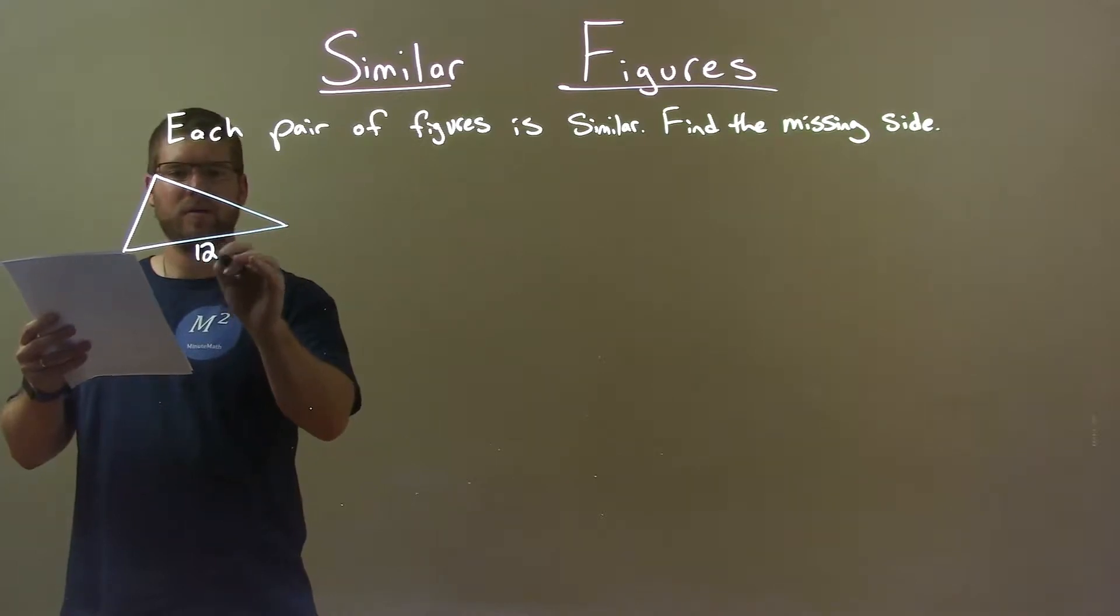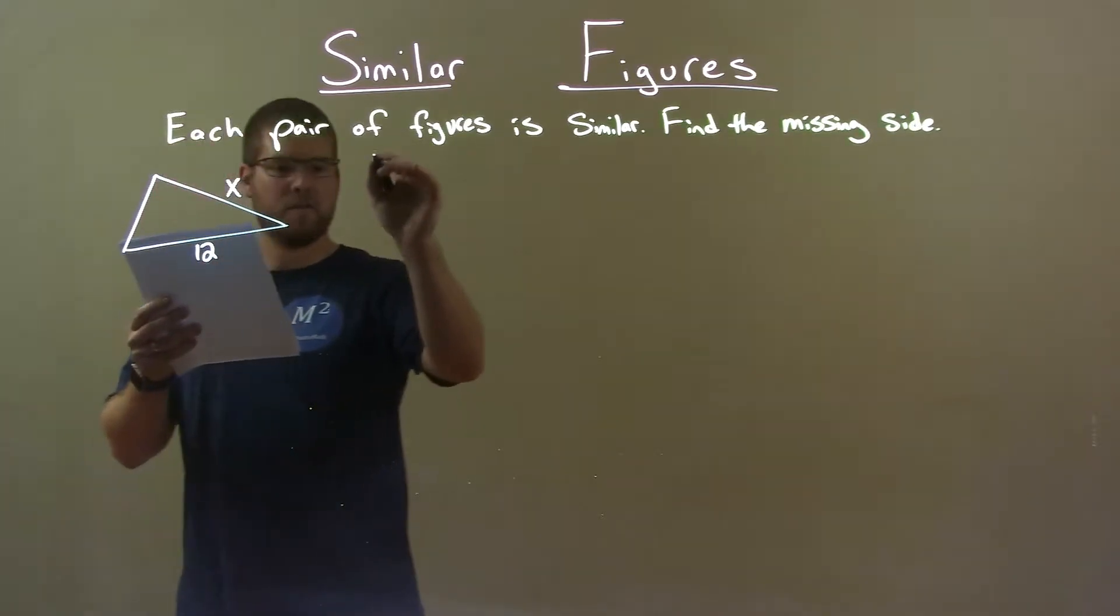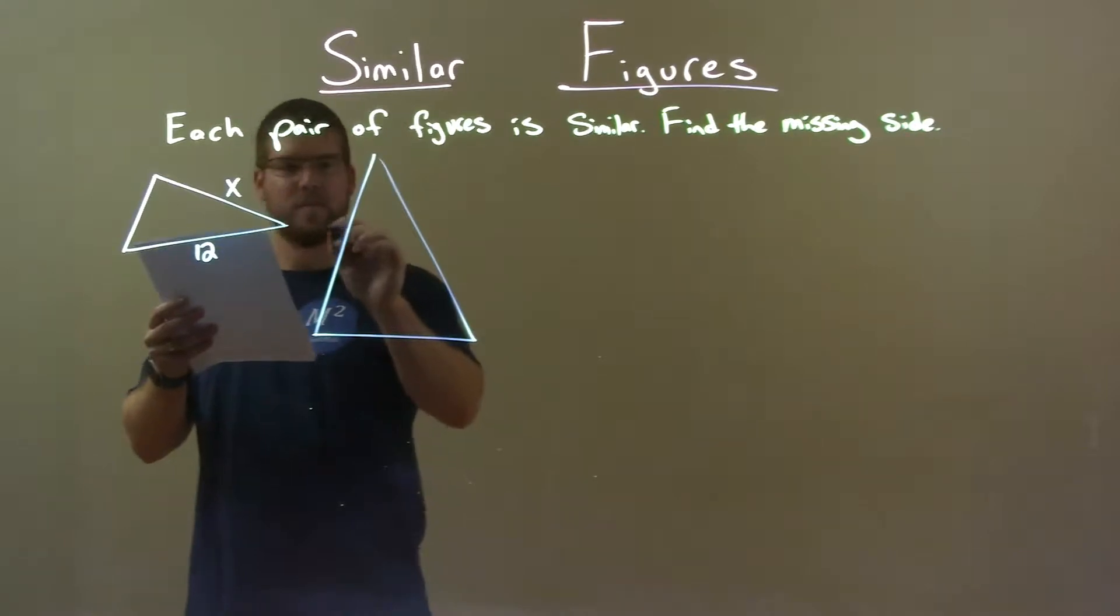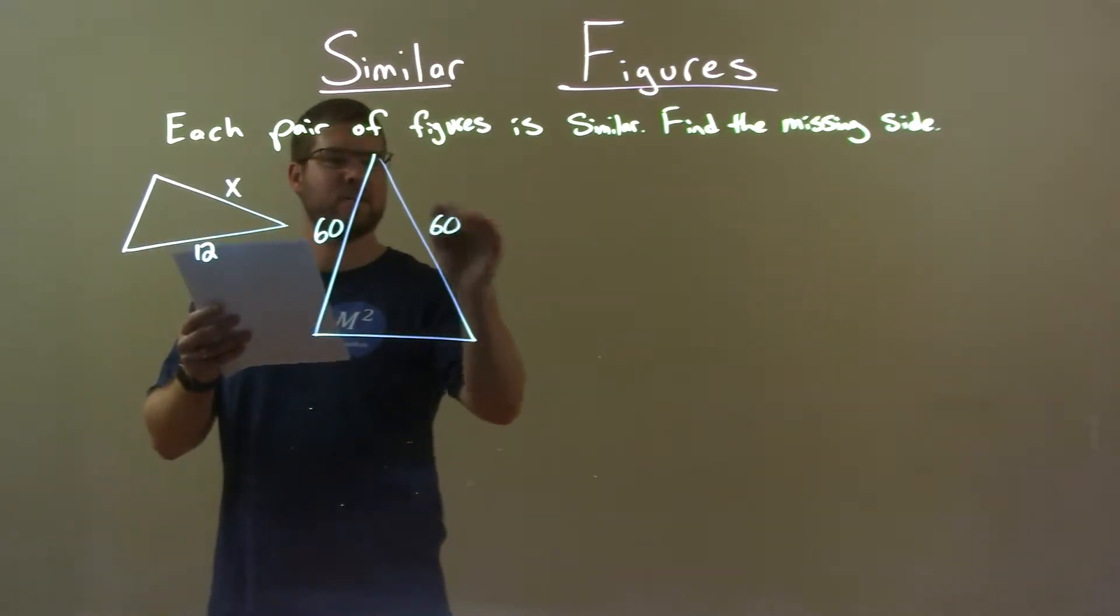okay, this is 12, and this is X. Another triangle, and they said this is 60, and this one is 60 as well.